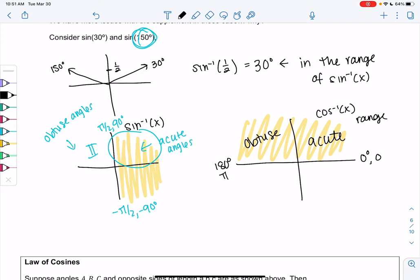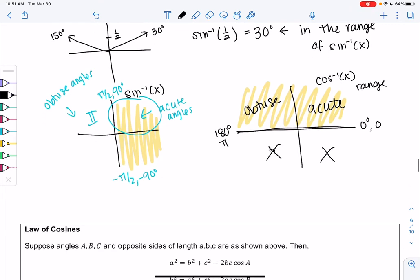And so law of cosines can find acute angles, which are less than 90 degrees, or obtuse angles, which are greater than 90 degrees. And we don't have to worry about the third or fourth quadrant because triangles are less than 180.